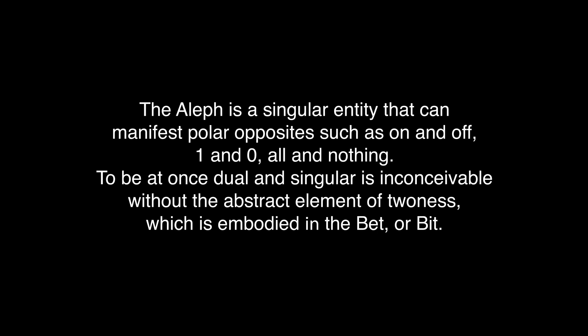A quick recap: the Aleph is a singular entity that can manifest polar opposites such as on and off, one and zero, all and nothing. To be at once dual and singular is inconceivable without the abstract element of 'twoness,' which is embodied in the Bet — or bit.